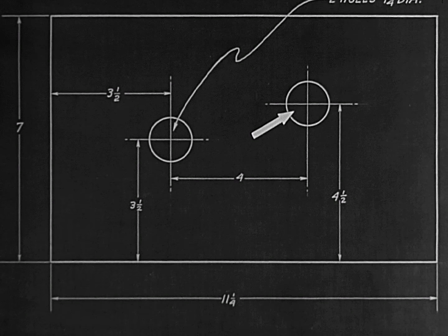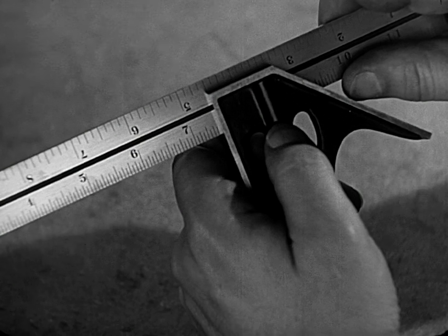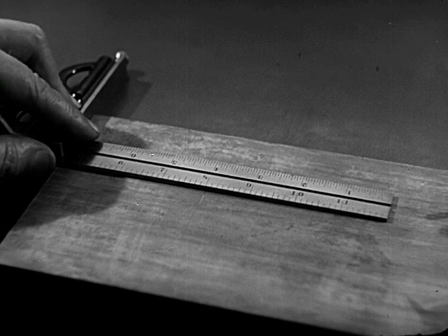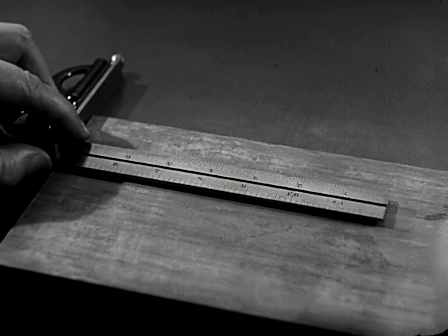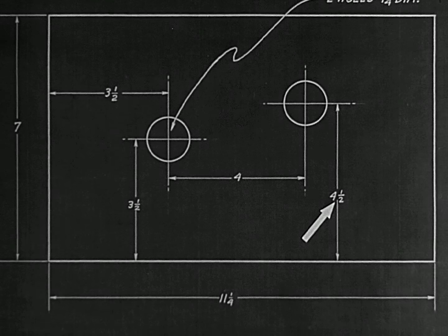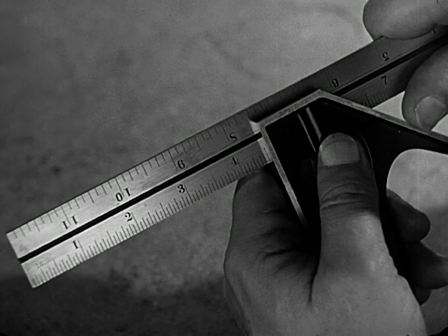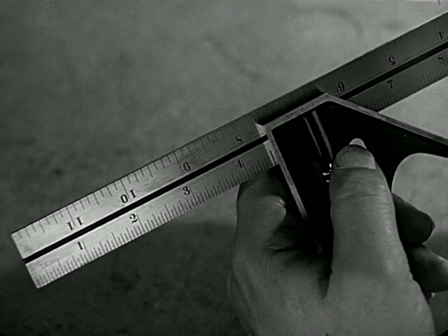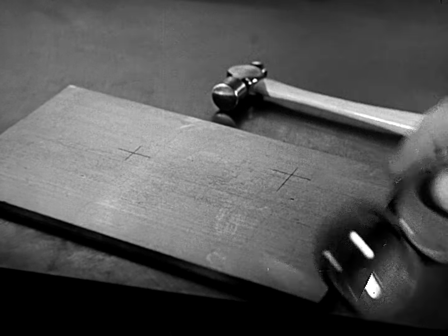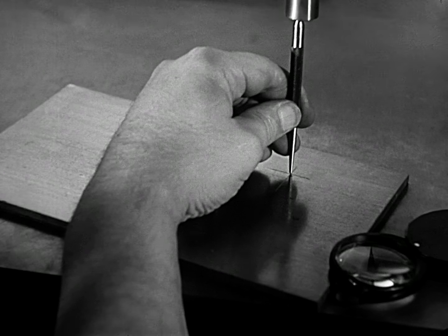According to the drawing, the second hole should be four inches from the first. Set the rule four inches more to the seven and a half inch index. The center of the second hole is to be four and a half inches from this edge, according to the blueprint. Set the rule to the four and a half inch graduation on the scale. The juncture of the lines is nicked with a center punch — use a magnifying glass to assure accurate centering. A light tap is all that is required; a heavy blow may shift the punch.